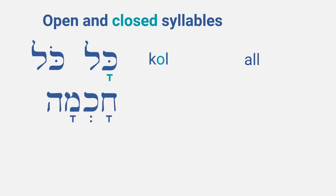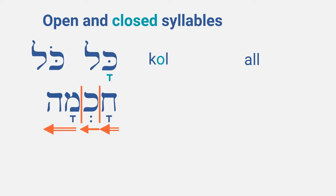Now this one. It has two Kametzes, so let's look at the syllables. Let's first divide it up. The last part is clearly open because a he cannot close a syllable, so it is a normal Kametz. But what about the first half? Is it one syllable or two? If it is two syllables, the shwah is pronounced and both syllables are open and the Kametz is long. Or if it is one syllable, it is closed, the Kametz is a Kametz Gatuf and the shwah is silent.